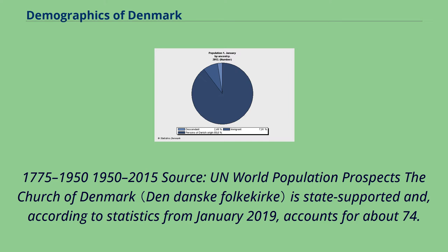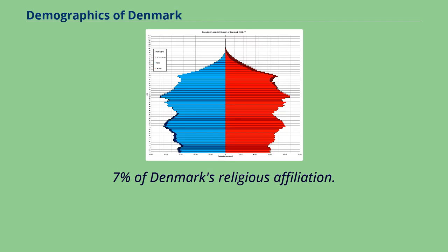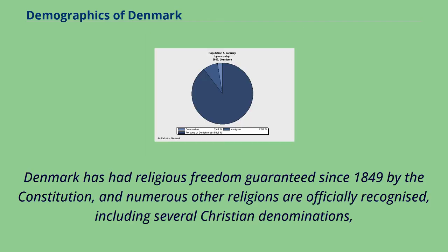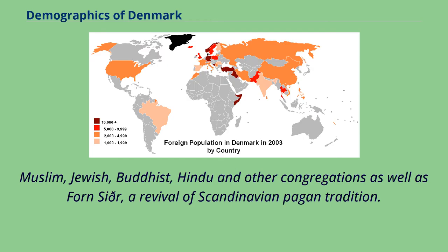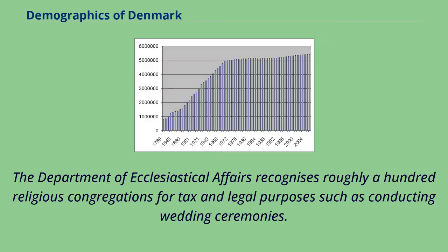The Church of Denmark is state-supported and, according to statistics from January 2019, accounts for about 74.7 percent of Denmark's religious affiliation. Denmark has had religious freedom guaranteed since 1849 by the constitution, and numerous other religions are officially recognized, including several Christian denominations, Muslim, Jewish, Buddhist, Hindu, and other congregations, as well as Forn Siðr, a revival of Scandinavian pagan tradition. The Department of Ecclesiastical Affairs recognizes roughly a hundred religious congregations for tax and legal purposes, such as conducting wedding ceremonies.